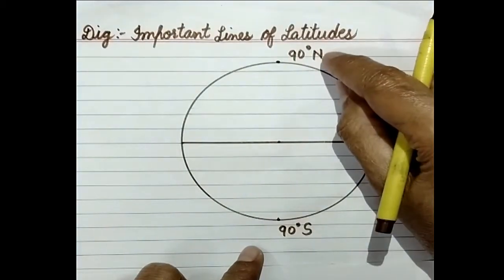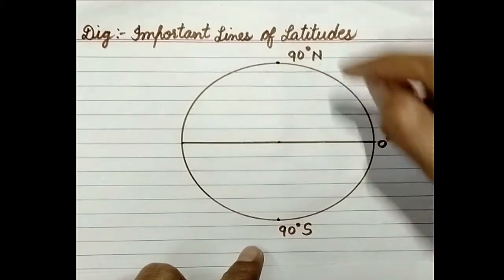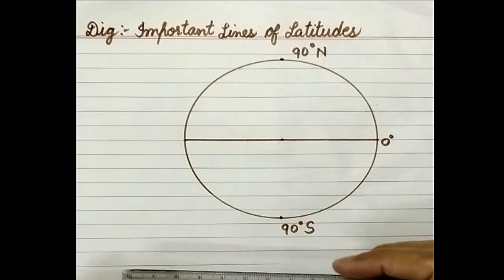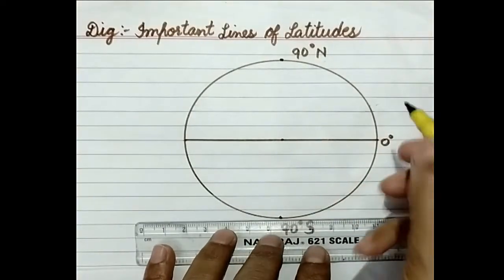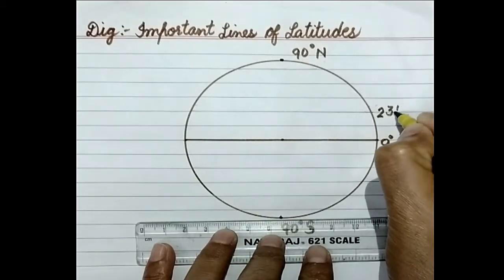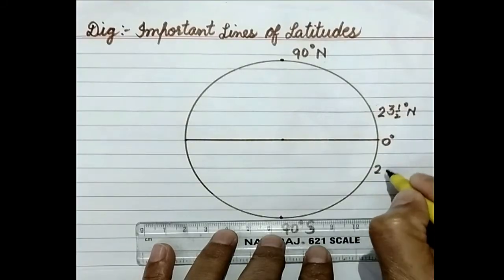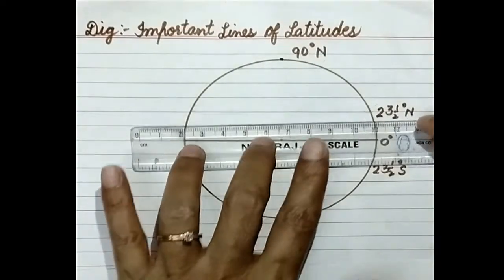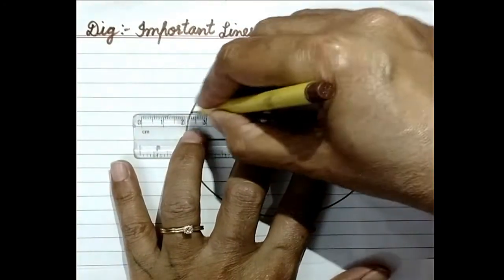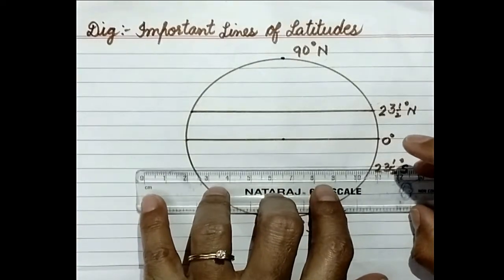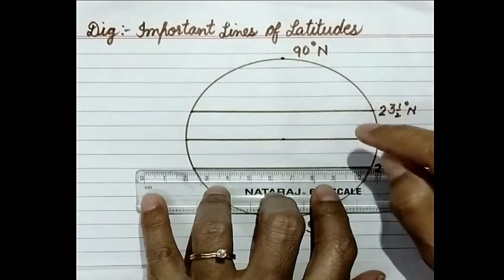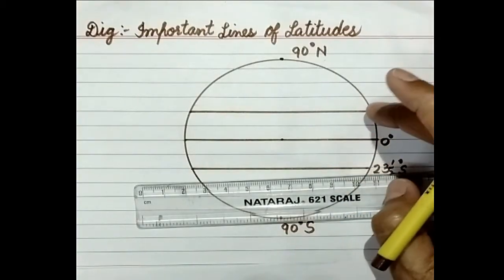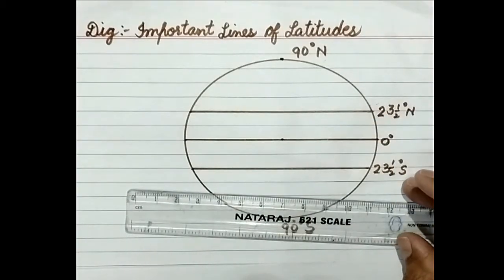Next you are to draw Tropic of Cancer. It is 23.5 degree north and 23.5 degree south. These are the lines of latitude, important parallels. You are to draw this way, keeping the same distance. I have left one line and then on the second line I have marked line on the upper side. It will be marked with N. On the below side it will be marked south.